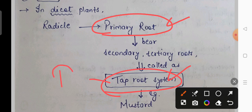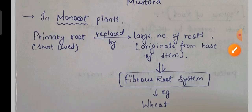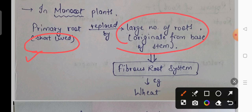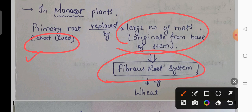This tap root system is found in dicots — the most common example is mustard. If we talk about monocots, the primary root is very short-lived. It is replaced by many roots which originate from the stem. This type of root system is called the fibrous root system, which we find in monocots, while tap root system is found in dicots.